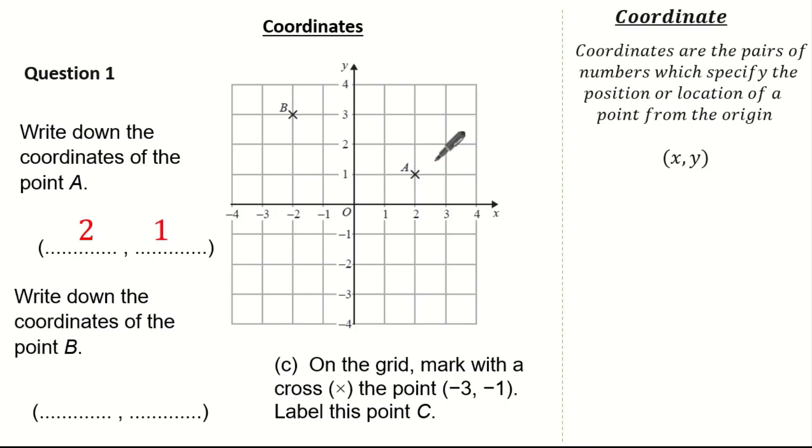Now let's write the coordinate of b. Remember, always from the origin we've gone across to minus 2 and then we've gone up 3. So therefore our coordinate is minus 2, 3.